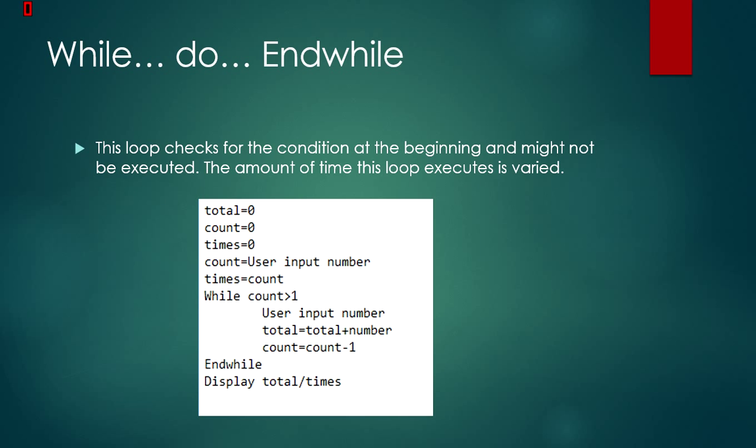While, do, and while is the second loop, and this loop checks for the condition at the beginning and might not even be executed. The amount of times this loop executes is varied.